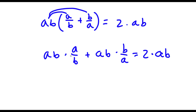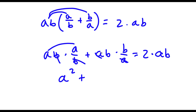Now for this term, the two b's cancel out and a times a gives a squared. So I have a squared plus — for the next term, the two a's cancel out and I have b times b which is b squared. And this is equal to 2 times ab, which is simply 2ab.